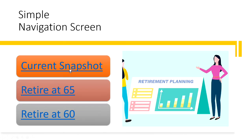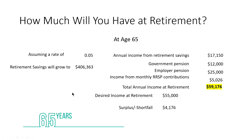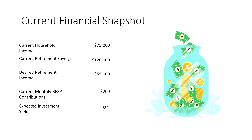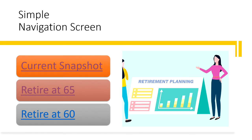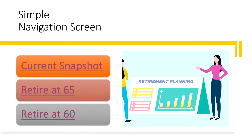Back to the presentation — I set up a very simple navigation screen with links you can connect anywhere. Clicking here takes you to the current snapshot; clicking here takes you to retiring at 65, showing how much you'll have with a surplus of $4,176 a year over the household income you wanted at retirement. Going back to the navigation screen, if you want to jump to retiring early at age 60, here's how much you'd have — you'd end up with a shortfall of $8,767.